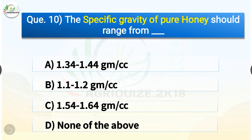Question number ten: The specific gravity of pure honey should range from which of the following? The options are: 1.34 to 1.44 g/cc, 1.1 to 1.2 g/cc, 1.54 to 1.64 g/cc, or none of the above. The correct answer is option A — 1.34 to 1.44 g/cc. The specific gravity of pure honey should range from 1.34 to 1.44 g/cc.